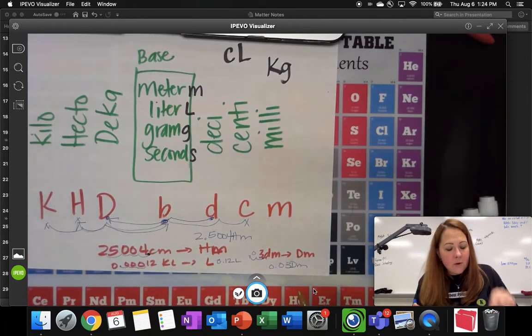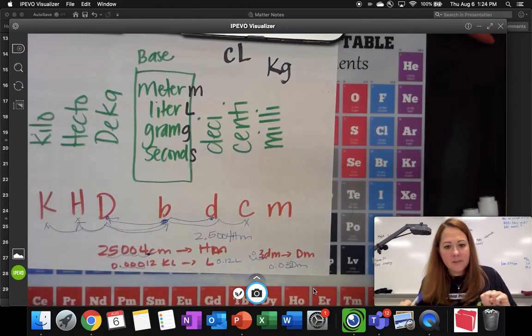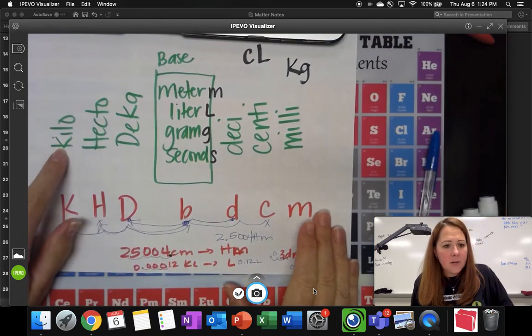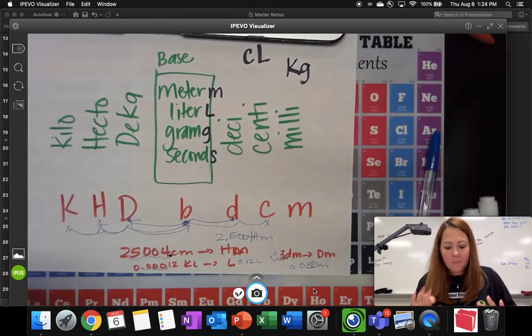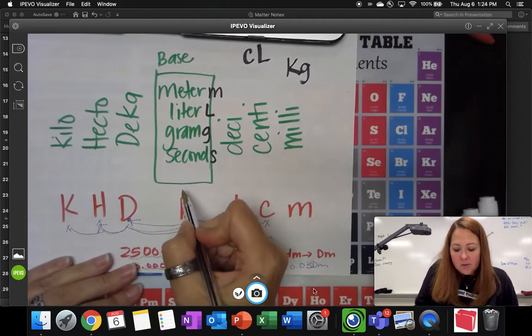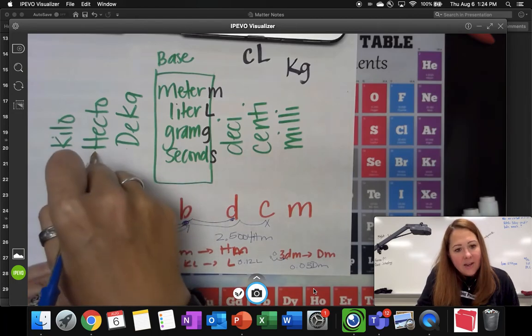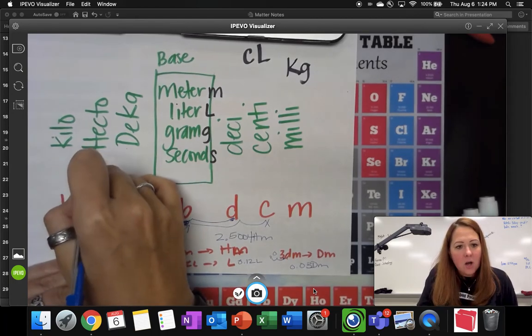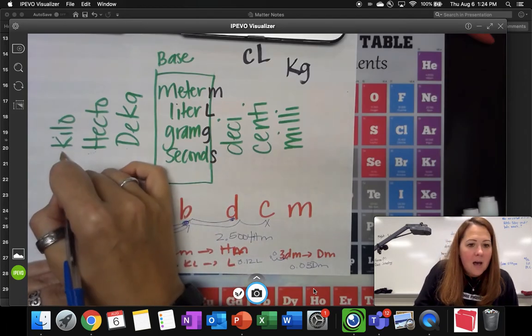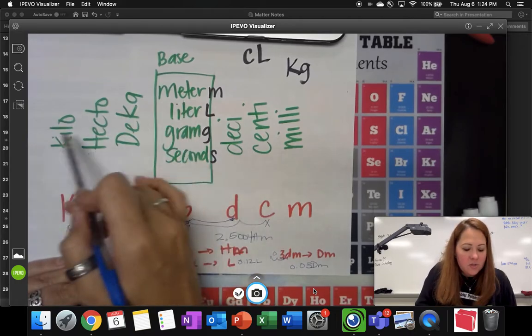So whenever you're using this chart, you're going to move your decimal place the same direction, the same number of places. When you look at the chart, a kilometer is like a mile. It's really, really, really big. And it basically goes by tens. So if this is one, there's 10 decameters in one meter. If you move over again, hectometer, it would be a hundred. So there's a hundred meters in one hectometer. For a kilometer, that would be a thousand. So there's a thousand meters in one kilometer.